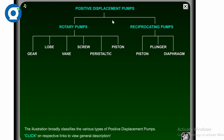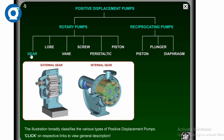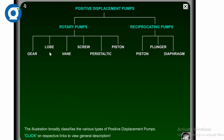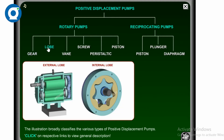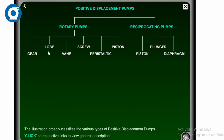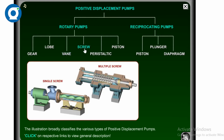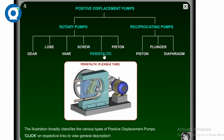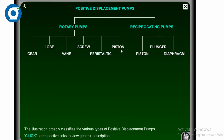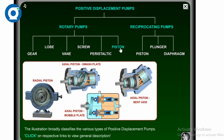Positive displacement pumps are primarily categorized into two types: rotary pumps and reciprocating pumps. In rotary pumps, we have six types. These are: rotary gear pumps — which include external gear pumps and internal gear pumps; rotary lobe pumps; rotary vane pumps — which include sliding vane pumps and flexible vane pumps; rotary screw pumps — which include single screw pumps and multi-screw pumps; rotary peristaltic pumps or flexible tube pumps; and rotary piston pumps — which have two subtypes: radial piston and axial piston.